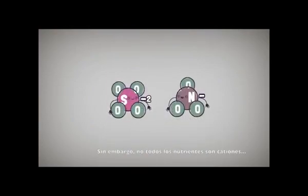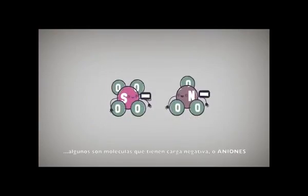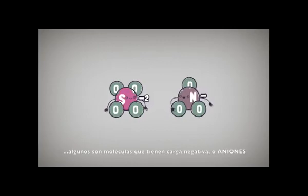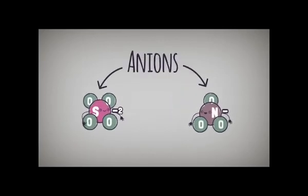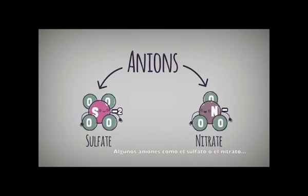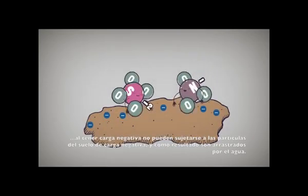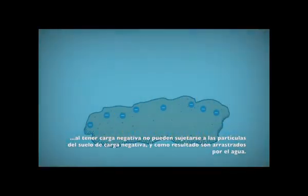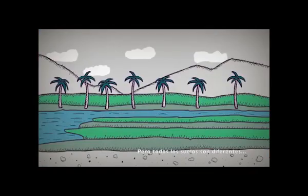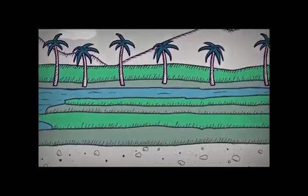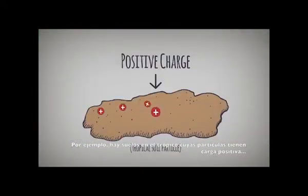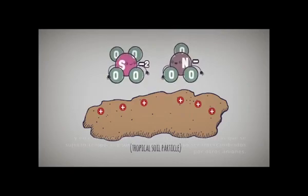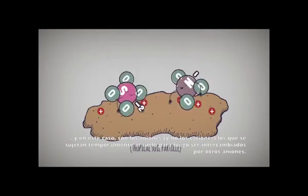Not all nutrients are cations, however. Some are actually negatively charged compounds, or anions. Since anions like nitrate or sulfate have a negative charge, they are unable to attach themselves to negatively charged particles and, as a result, leach out when watered. Of course, all soils are different. There are soils in the tropics, for example, that have positively charged soil particles. And in that case, it's the anions, not cations, that are held temporarily and then exchanged with other anions.